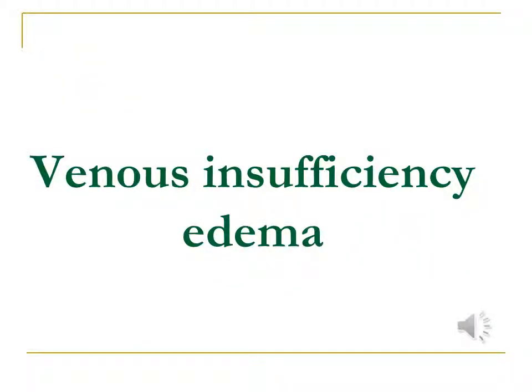A few words about venous insufficiency edema, which is one of the commonest causes of edema. The blood moves from the lower part of the body to the heart against gravity, and for this to occur two factors are needed: the veins should have competent valves keeping the flow of blood moving in one direction towards the heart, and the muscles should have enough tone and contraction to squeeze the veins to push the blood up. In many elderly people, as a result of the passage of time, the veins gradually dilate as a result of the blood pressure inside them.